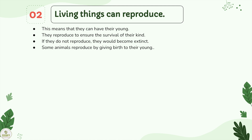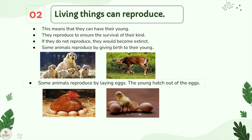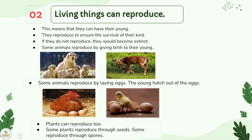Next, living things can reproduce. This means that they can have their young. They reproduce to ensure the survival of their kind. If they do not reproduce, they would become extinct. Some animals reproduce by giving birth to their young. Some animals reproduce by laying eggs, and the young hatch out of the eggs. Plants can reproduce too — some plants reproduce through seeds, and some reproduce through spores.